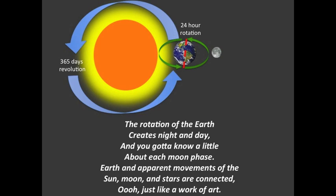The rotation of the earth creates night and day, and you gotta know a little about each moon phase. Earth and apparent movements of the sun, moon, and stars are connected — just like a work of art.